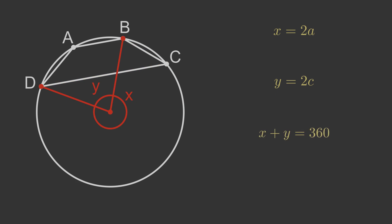And as before, X plus Y equals 360. These three facts, X equals 2A, Y equals 2C and X plus Y equals 360 are the facts we used to prove the theorem earlier. Those facts are still true in this case, so the theorem still holds.